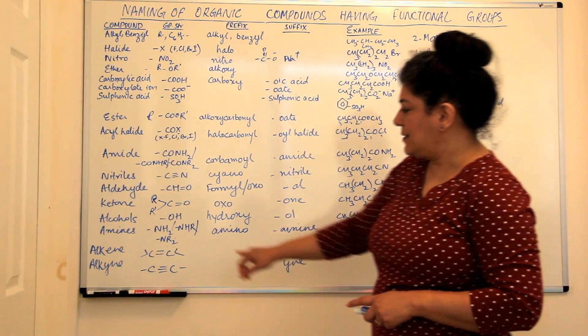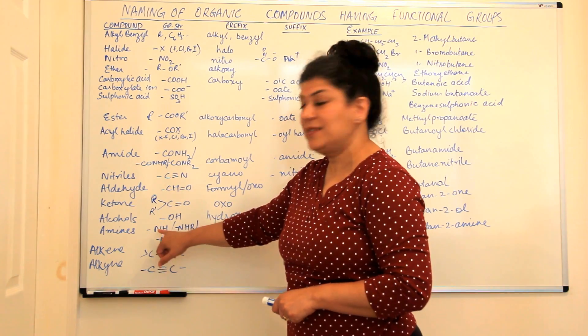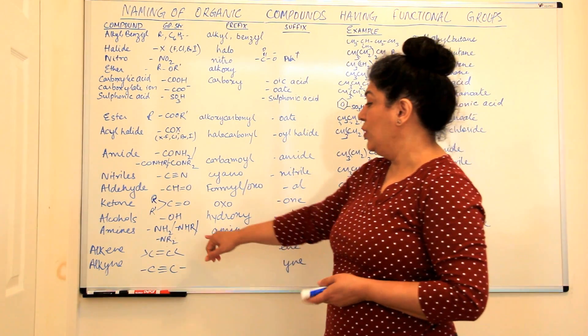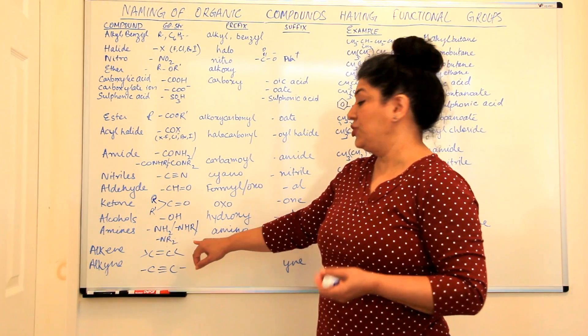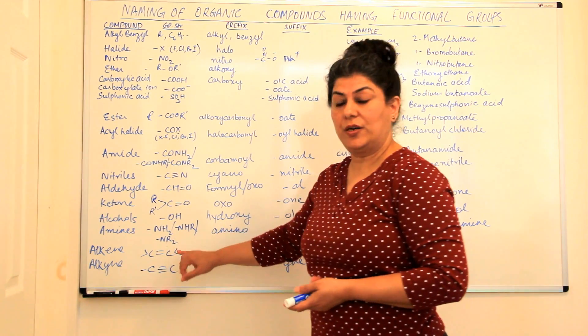Now the last of the functional groups is amines. The amines are represented by NH2. The formula is NH2 where the hydrogens can be substituted by alkyl groups.